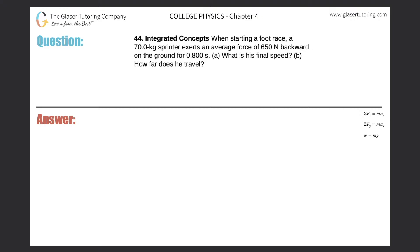Number 44, integrated concepts. When starting a foot race, a 70 kilogram sprinter exerts an average force of 650 newtons backward on the ground for 0.8 seconds. What is his final speed?